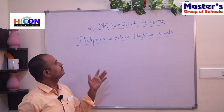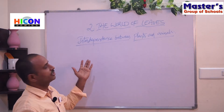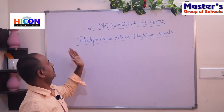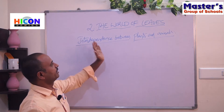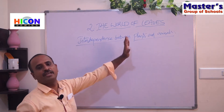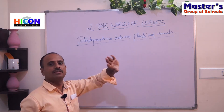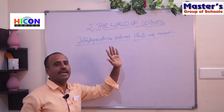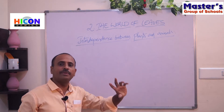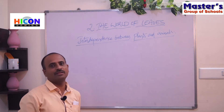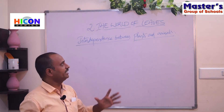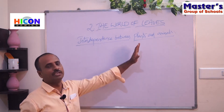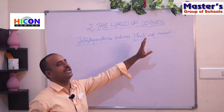The next topic in this chapter is interdependence between plants and animals — that means how plants and animals are dependent on each other. So what is the relation between plants and animals?